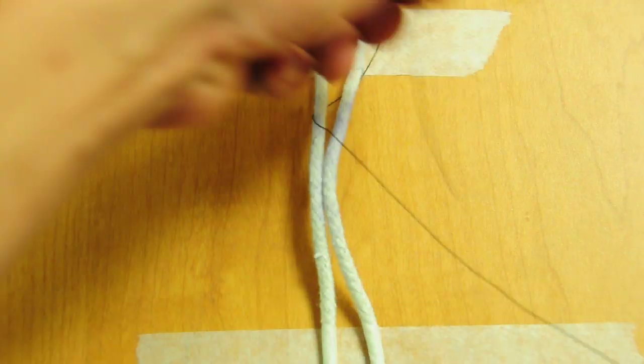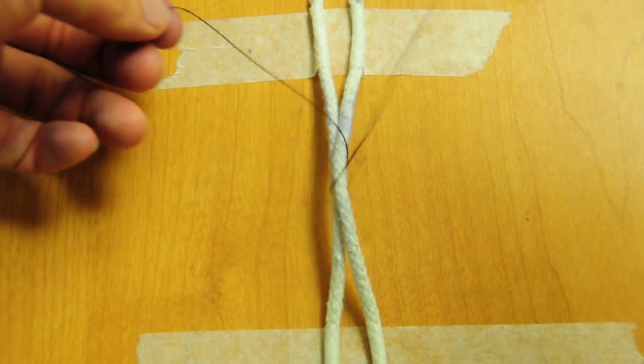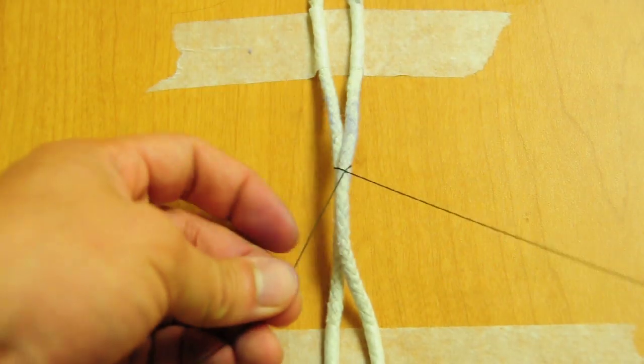So remember, you're pulling through. You don't want to leave a lot of tail. Otherwise, it's harder to tie your one-handed knots. Just take as much as you can. Conserve suture.